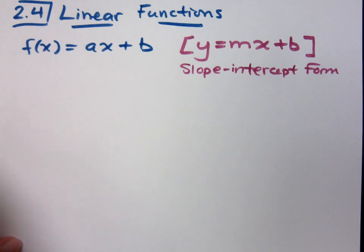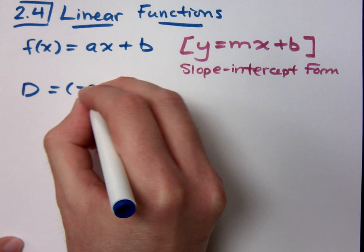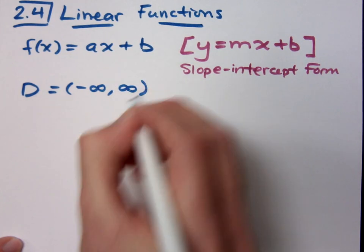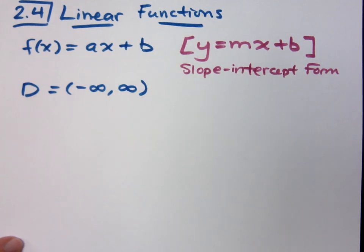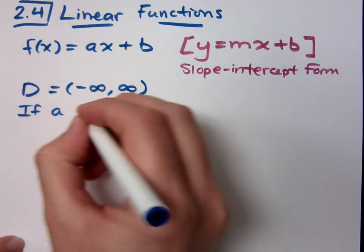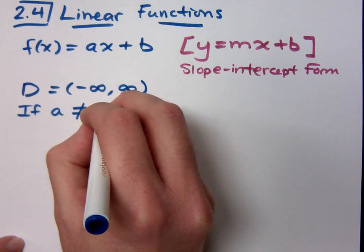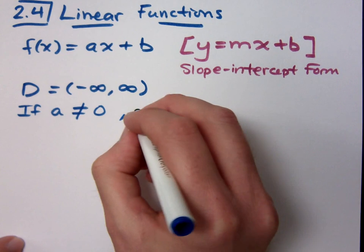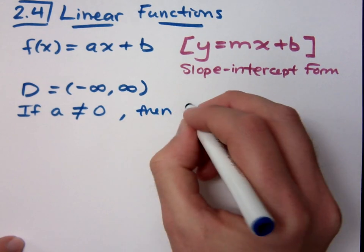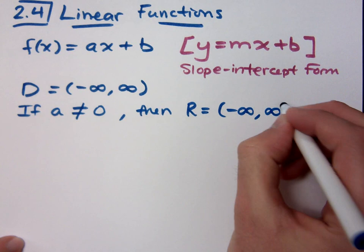When you have something like this, you need to know that the domain is always going to be all real numbers. Now, if that lead coefficient does not equal zero, then the range will also be all real numbers from negative infinity to infinity.